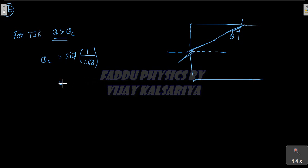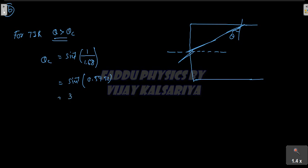Let's simplify: theta-C equals sine inverse of 0.5952, which gives theta-C equal to 36.5 degrees.